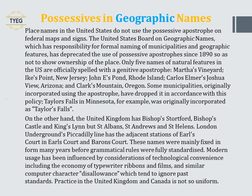On the other hand, the United Kingdom has Bishops' Stortford, Bishops' Castle, and Kingsland, alongside St Albans, St Andrews, and St Helens. London Underground's Piccadilly Line has the adjacent stations of Earl's Court and Baron's Court. These names were mainly fixed many years before grammatical rules were fully standardised. Modern usage has been influenced by considerations of technological convenience, including the economy of typewriter ribbons and computer character disallowance, which tend to ignore past standards. Practice in the United Kingdom and Canada is not so uniform.